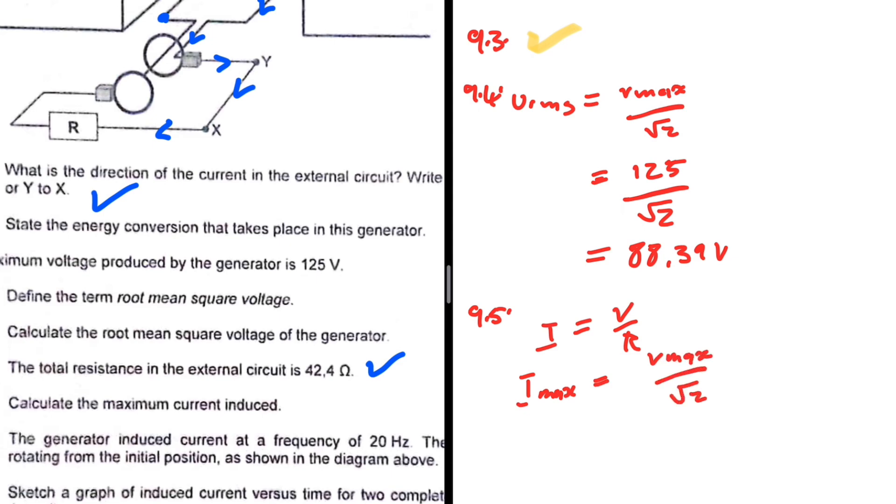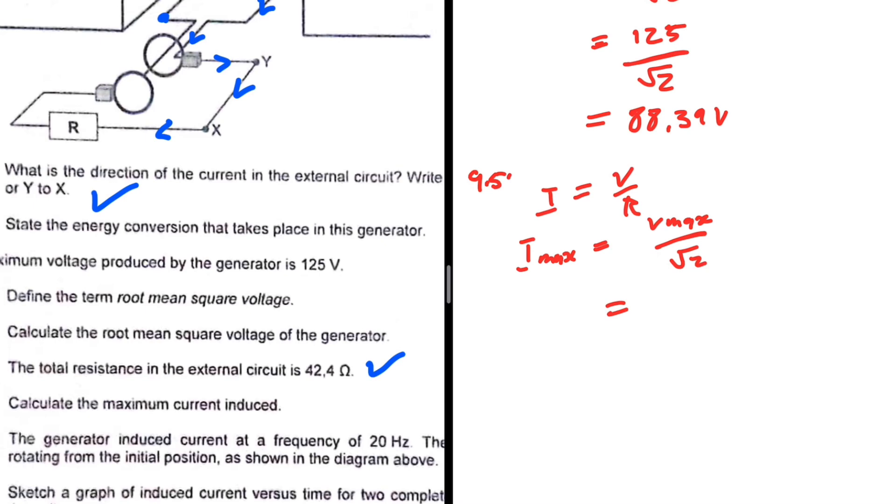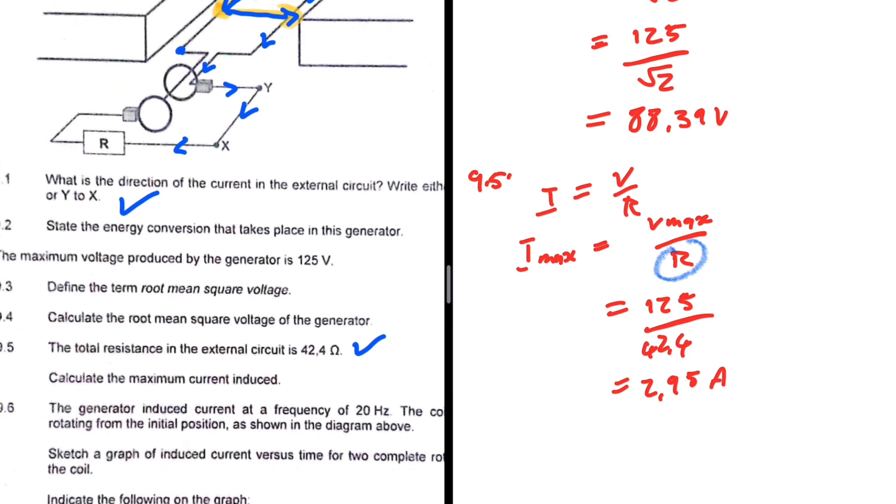Not square root of 2—I'm making a mistake. Divided by the resistance, which is 42.4. So 125 divided by 42.4 is 2.95 amperes. And there we go, that is our maximum current induced.